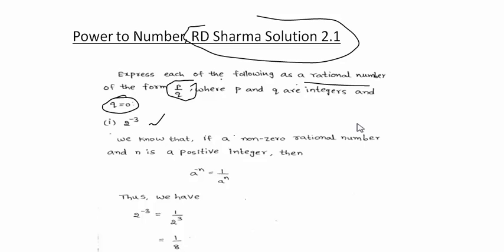2 to the power minus 3. We know that if a is a non-zero rational number and n is a positive integer, then